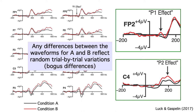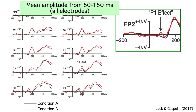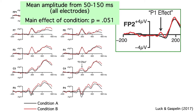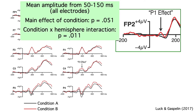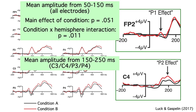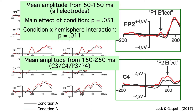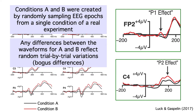To statistically analyze the data, I used the time windows and electrode sites that looked like they had big effects. I measured the P1 effect from 50 to 150 milliseconds at all electrode sites and ran a three-way ANOVA with factors of condition, electrode hemisphere, and anterior-to-posterior electrode position. The main effect of condition wasn't quite significant, but the condition-by-hemisphere interaction was significant at p = 0.011. I measured the P2 effect from 150 to 250 milliseconds at the central and parietal electrode sites, and found a statistically significant main effect of condition. So even though there are no true differences between these conditions, I was able to find statistically significant effects. I know these effects are bogus because the two conditions were just different random subsets of the same trials.